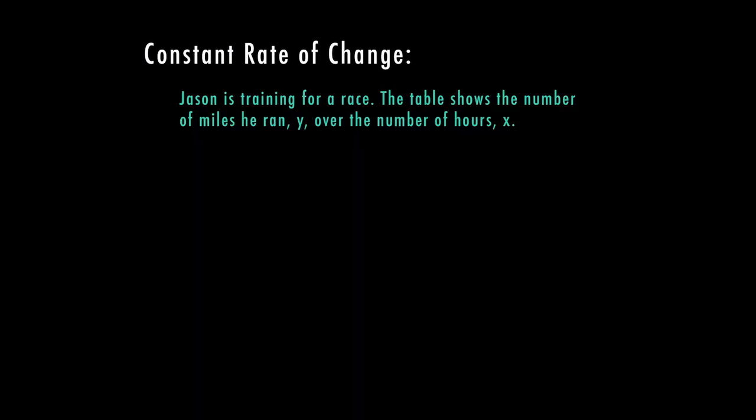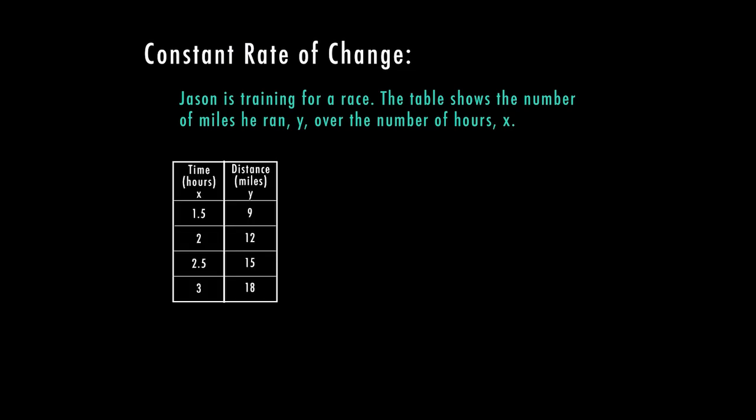So for this first example, Jason is training for a race. The table shows the number of miles he ran, y, over the number of hours, x. So this has already been labeled. If it's not labeled, usually x is going to be the first column and y is going to be the second column. If it's written horizontally, x is usually on top and y is on the bottom.